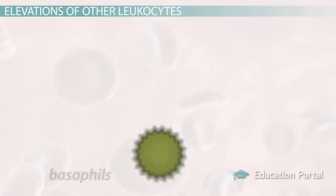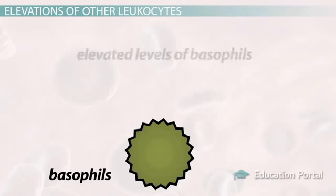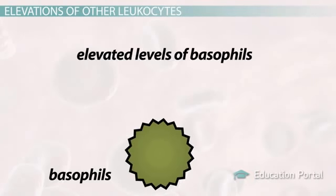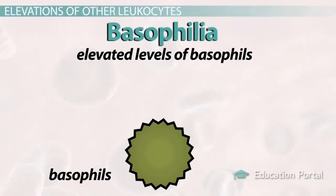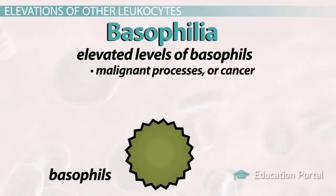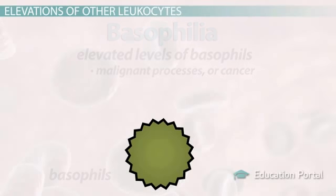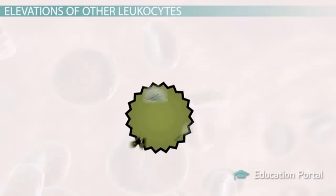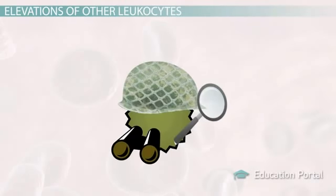Finally, rarely elevated levels of basophils, termed basophilia, as a result of malignant processes or cancer can cause abnormal elevations in white blood cells. Basophils are, in many cases, very similar to eosinophils in how they function.